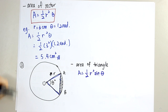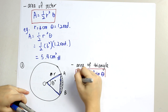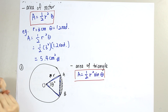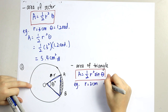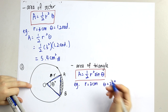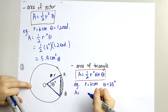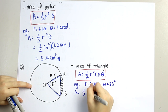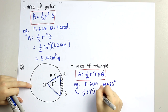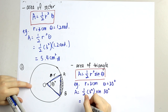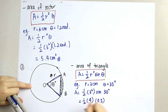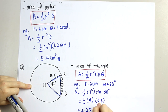Let's try an example. We are given r equals 3 cm and theta equals 30 degrees. We do 1 over 2 r squared sin theta, which is sin 30 degrees. We get the answer 2.25 cm squared.